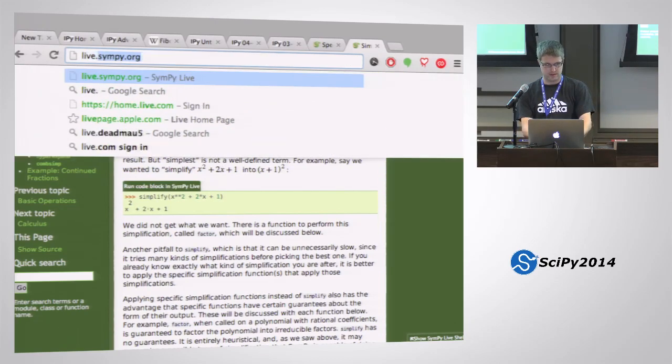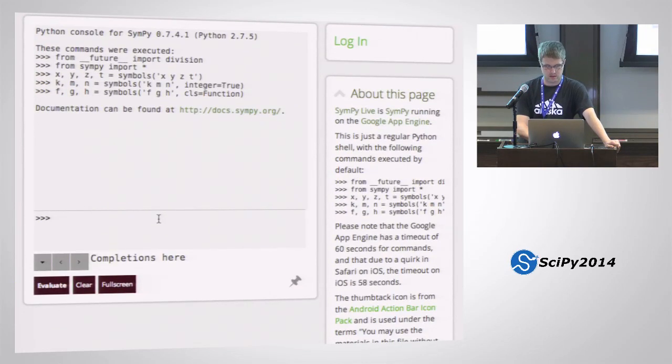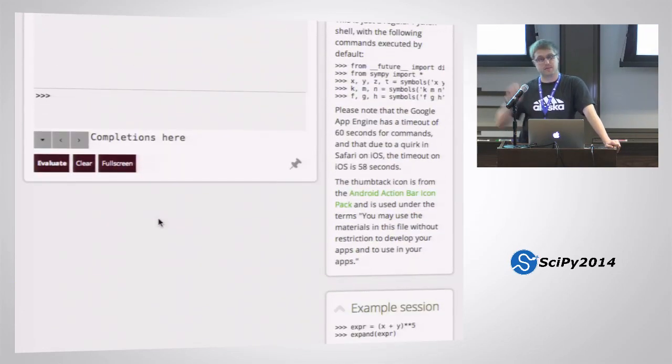And you can also go to live.sympy.org, and that's just this shell here. This also has a mobile version. So if you go to it on your phone, it has a nice little SymPy calculator.